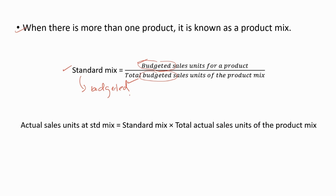When you have to calculate the standard mix, take the budgeted values for both numerator and denominator. Using the standard mix, you then have to calculate the actual sales units at standard mix by multiplying the standard mix by the total actual sales units of the product mix. Now let's do an example so you can understand this topic.